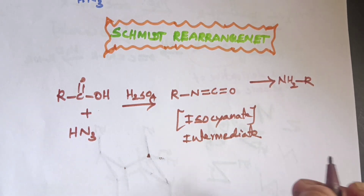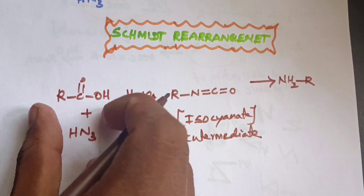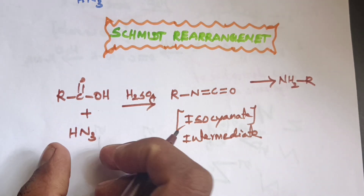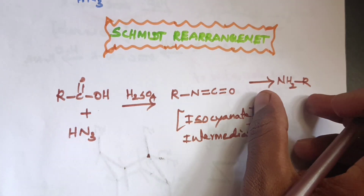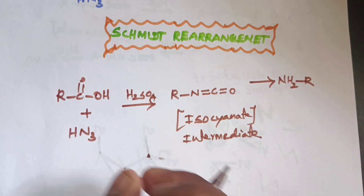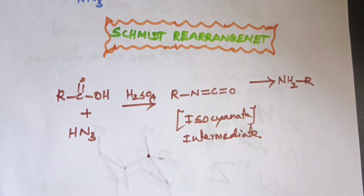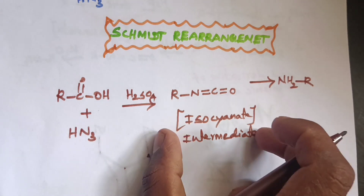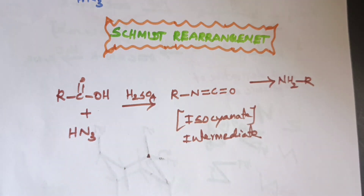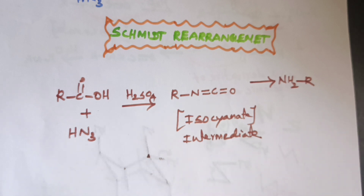So, carboxylic acid reacts with HN3 to prepare amines. Under acidic conditions, the intermediate formed is isocyanate.